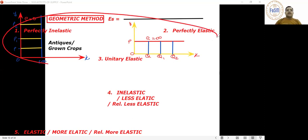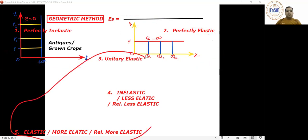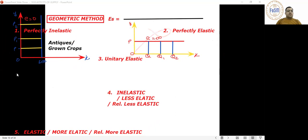These two are the rare among the rarest conditions. Your book will probably give you the three middle conditions, but not these two. Any query so far? Let's move ahead.